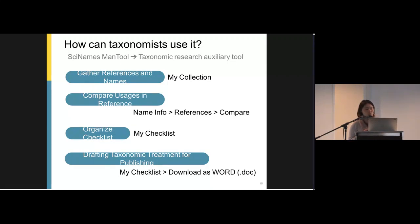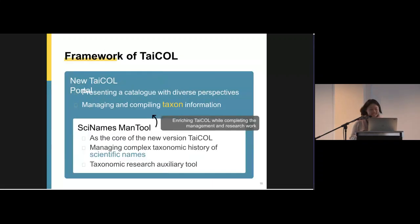So while they use this tool to do the management and the research work, they can also enrich TaiCOL. And the new TaiCOL portal presents the data from scientific names management tool. The data is from the tool. And because comprehensive taxonomic history can be preserved, the catalog can be presented with diverse perspectives. Also, taxon information is compiled in the TaiCOL portal, like photo conservation information and related links.